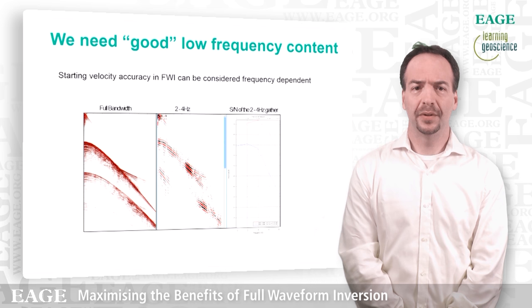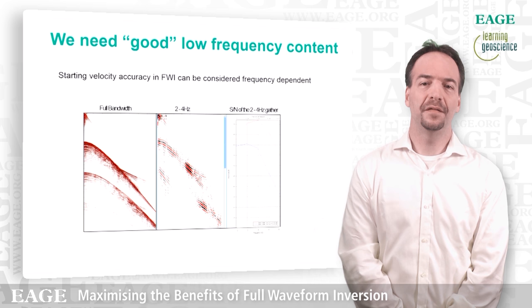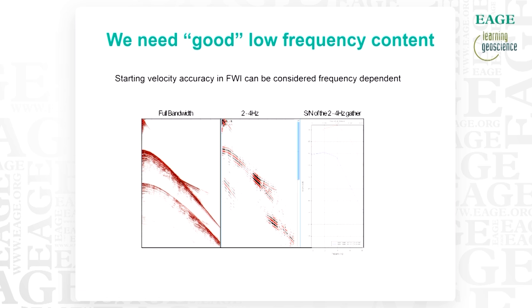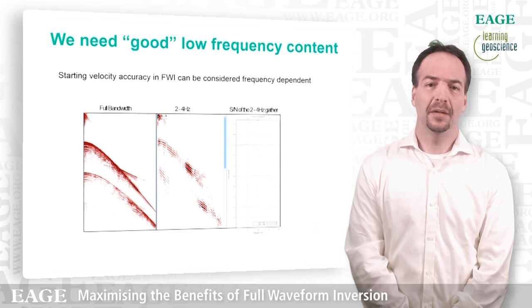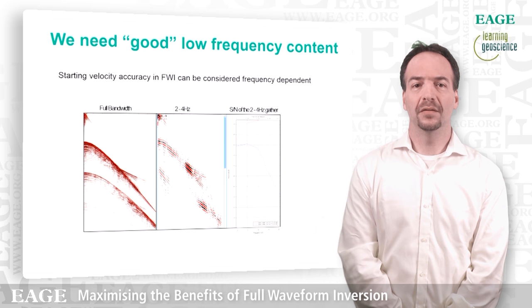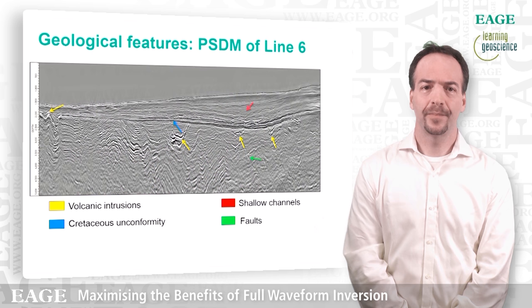But this is where good low frequency comes to our help. In fact, this concept of starting velocity model accuracy in FWI can be considered frequency dependent — i.e., something that is not accurate at 5 Hz can be accurate when we start at 3 Hz. Here I show from left to right a shot gather in the full bandwidth and then band-limited at 2 or 4 Hz, and then the signal-to-noise ratio for this band-limited gather. The red curve is the signal and the blue curve is the noise. We have plenty of good data at about 2 or 3 Hz, so we can actually use this data to start FWI at these frequencies and relax the constraint on the starting velocity model.